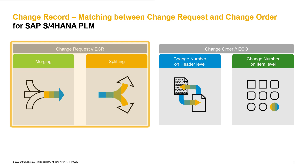During merging and splitting, only the change items get considered. The relation between merged and split change records — we call child and parent — will be shown on a hierarchy view on the change record application.